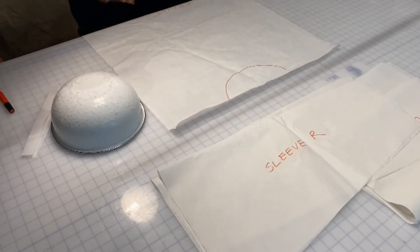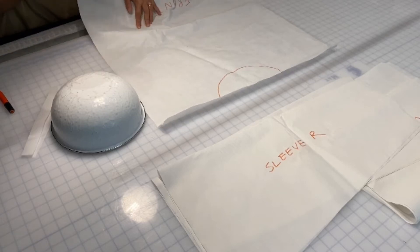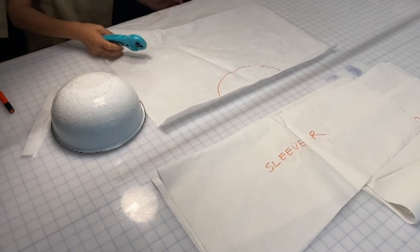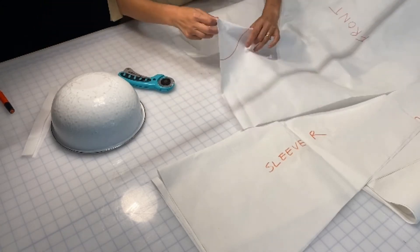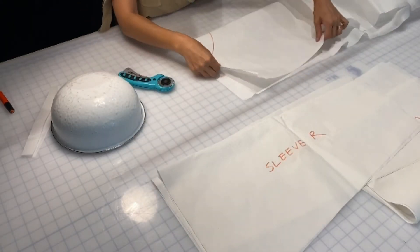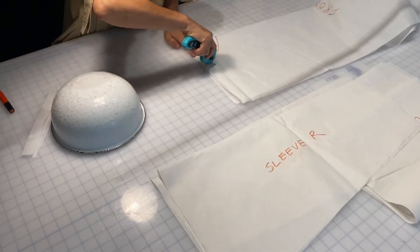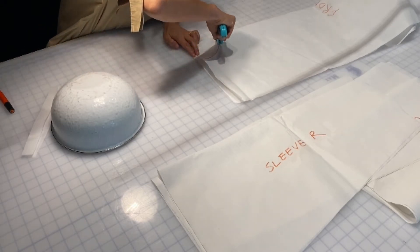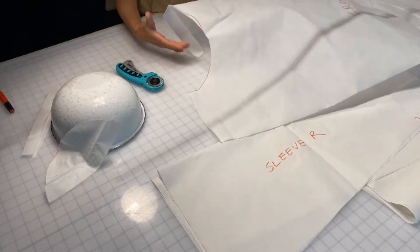Doesn't have to be perfect. And now we're going to cut along that line to remove the piece of the pattern that we don't need so that we have our neckline. There you go.